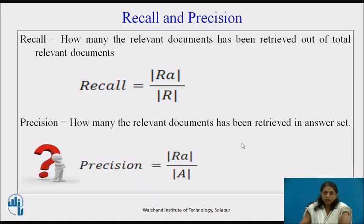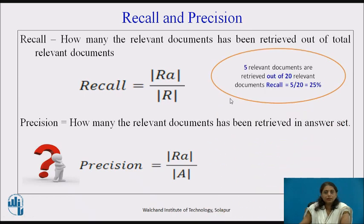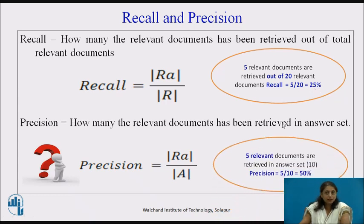Pause the video, consider the previous example, and try to calculate recall and precision. For the given query there are 20 relevant documents, out of which only 5 have been retrieved. So recall is 5/20, which is 25%. For precision, 5 relevant documents are retrieved in an answer set of 10, so precision is 5/10, which is 50%.